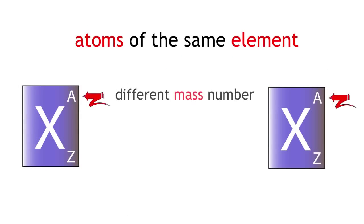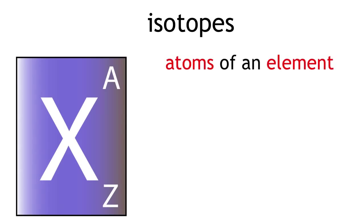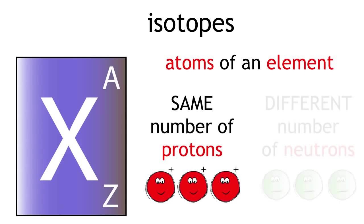Atoms of the same element with a different mass number are known as isotopes. They are defined as atoms of an element which have the same number of protons but a different number of neutrons.